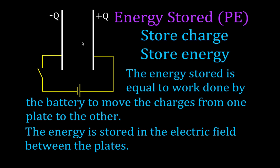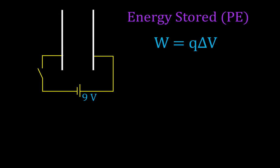That energy is stored in the electric field between the plates. When all of the charges have been moved over, we have a positive plate and a negative plate, and we have an electric field that goes from the positive to the negative, and the energy is stored in the electric field between those plates. So: stored energy, stored charge, work, potential energy — the energy is stored in the electric field between the plates. Now let's look in a little more detail at how we calculate that — how we calculate the work done, or the amount of energy that's been stored, moving the charges from one plate to another.